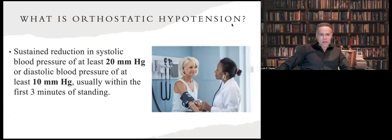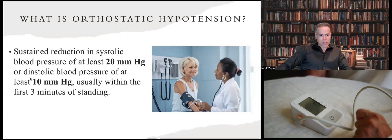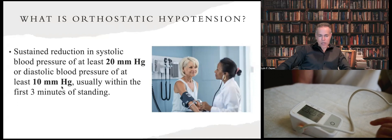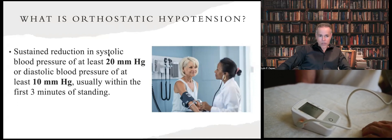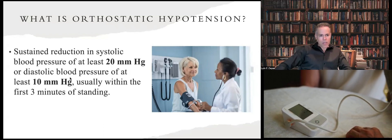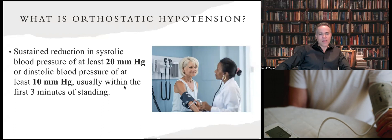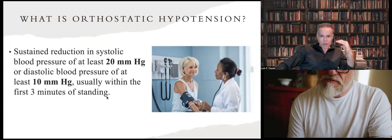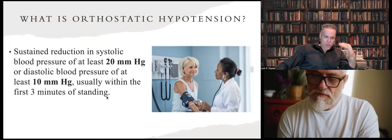Let me start by defining what orthostatic hypotension is. Orthostatic hypotension means a reduction, a decrease in the systolic blood pressure of at least 20 points, or diastolic blood pressure of at least 10 points. Remember, the systolic blood pressure is the upper number and the diastolic is the lower number, usually within the first three minutes of standing. So we are talking about a drop in blood pressure when you stand up.